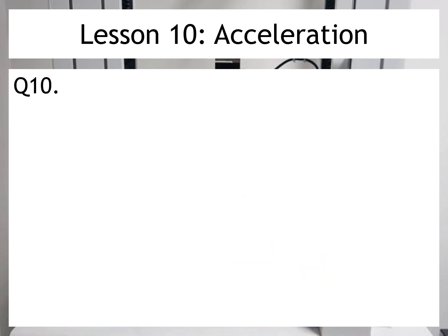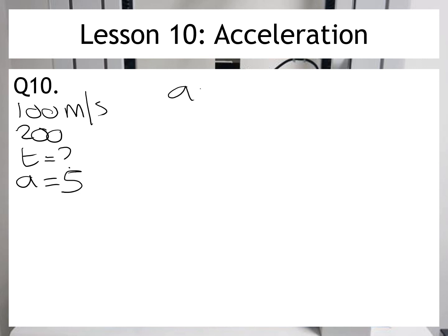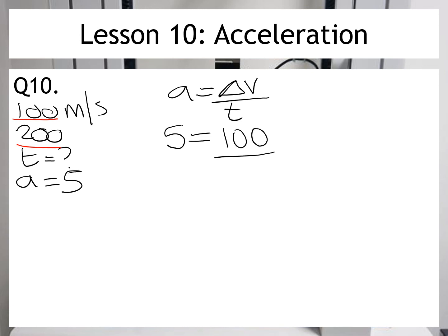So on question 10, we know that our aircraft starts at 100 metres per second and we know it accelerates to 200 metres per second. We don't know how long that's going to take, but we do know that the acceleration is equal to 5. Again, I'm going to write out my equation and then put the numbers in. So the acceleration is 5. The change in velocity this time goes from 100 up to 200, so the change in velocity is 100 metres per second. We don't know the time again this time.